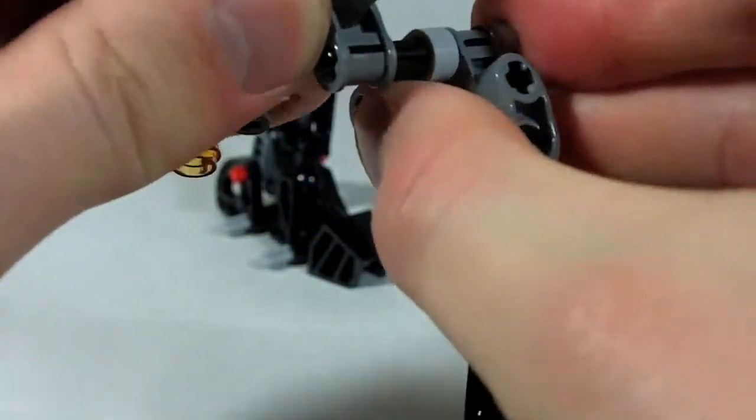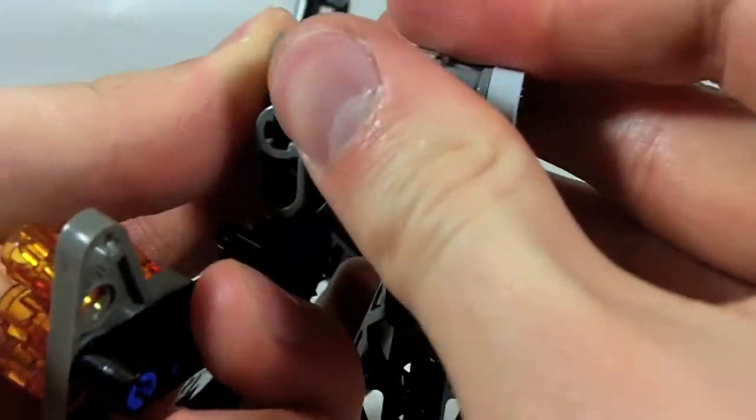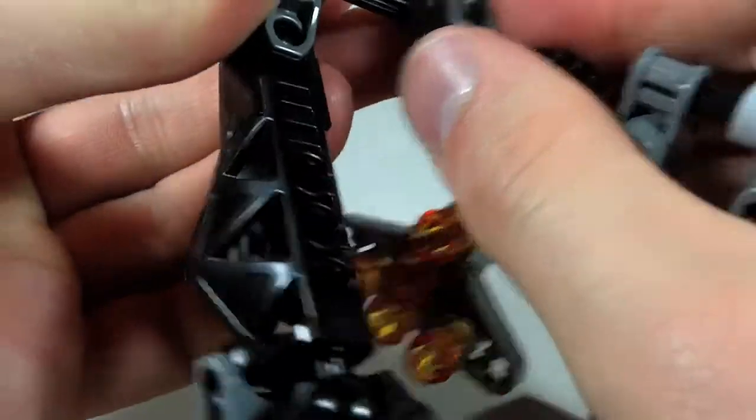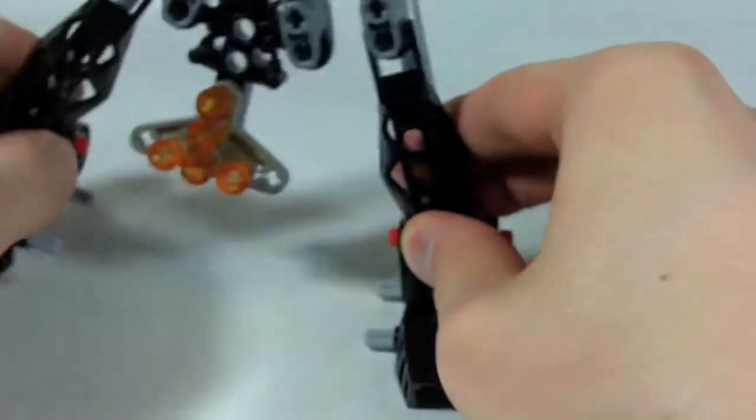And then connect the legs to the body like so, so that the head hangs down in the middle. And he can do his sneaky side to side movements.